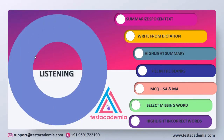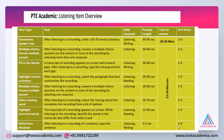The last module is listening. It has multiple question types: summarize spoken text, which is of high weightage; write from dictation; highlight summary; fill in the blanks; multiple choice single answer; multiple choice multiple answer; select missing word; and highlight incorrect words. In summarize spoken text, you listen to a recording and write a 50 to 70 word summary — it assesses both listening and writing skills. You get 2 to 3 questions and about 20 to 30 minutes to answer. In multiple choice choose multiple answer, you listen to a recording and select more than one response, with 2 to 3 questions. In fill in the blanks, a transcript with several gaps appears on screen; after listening, you type the missing word in each gap.